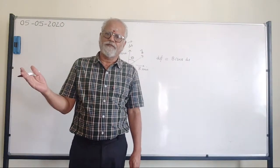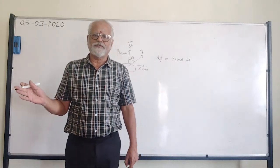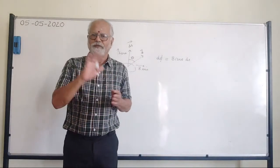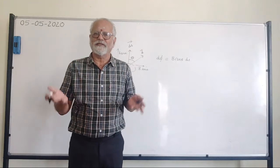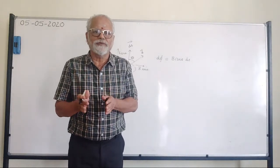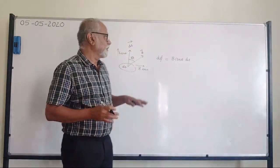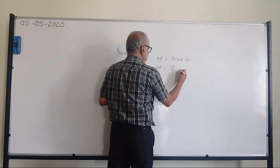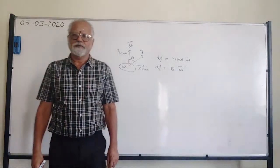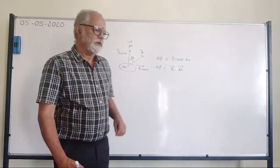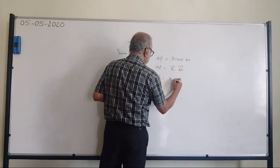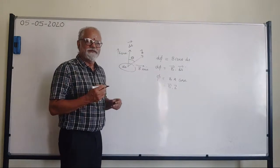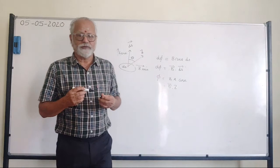Even though there is B·sinθ, it does not contribute to any magnetic flux. B·cosθ contributes. So it is B·cosθ which is responsible for magnetic flux. Therefore, a small magnetic flux dΦ is equal to the effective field B·cosθ multiplied by area dA. This is how we define magnetic flux. The only thing we should look for is the angle between the area vector and the magnetic field vector. For the total flux: Φ = B·A·cosθ.